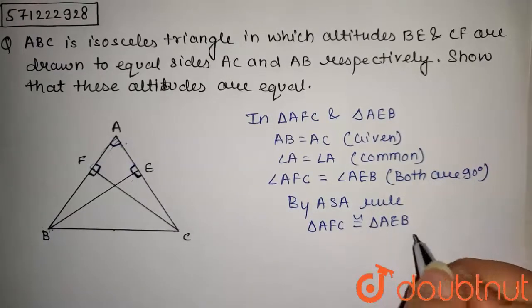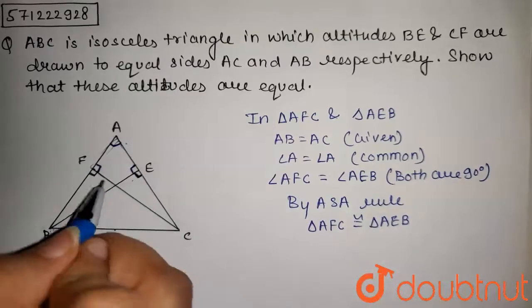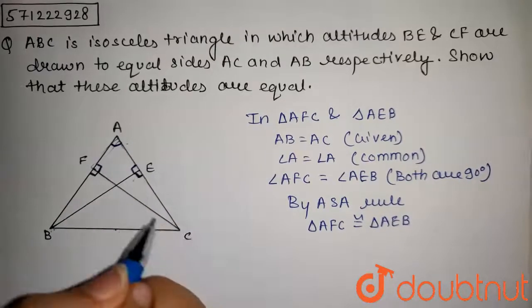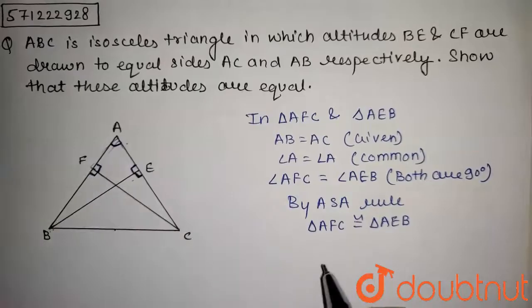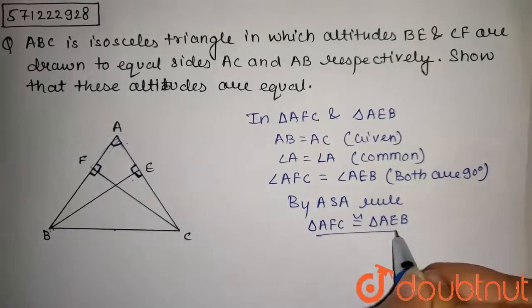Now as both of these triangles are congruent, the sides BE and CF are corresponding sides of these two triangles.